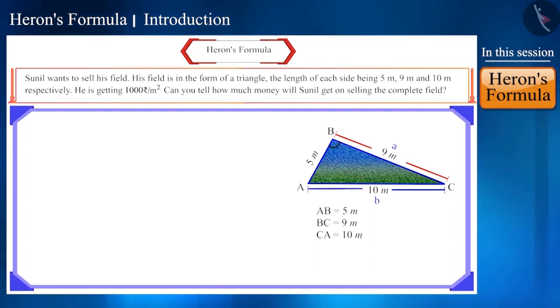So in triangle ABC, a is equal to 9 meter, b is equal to 10 meter and c is equal to 5 meter.